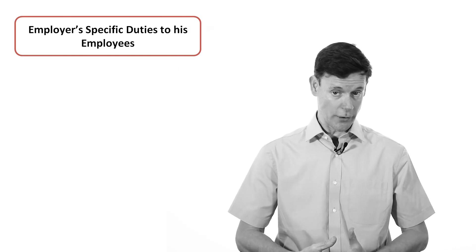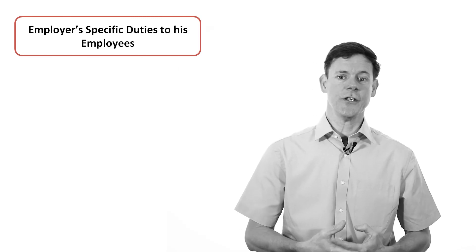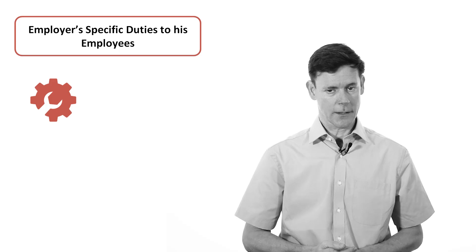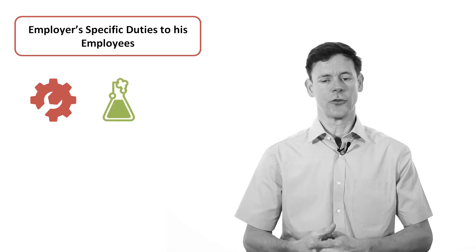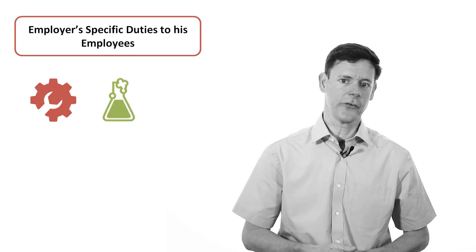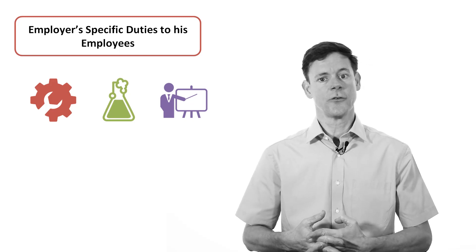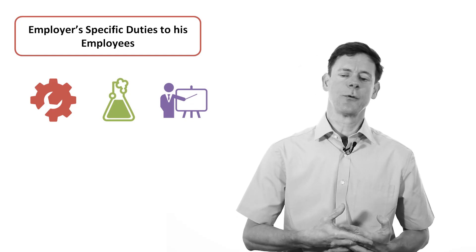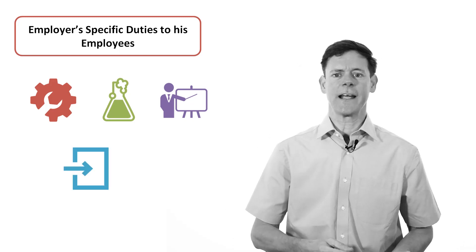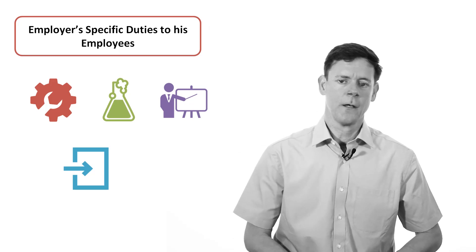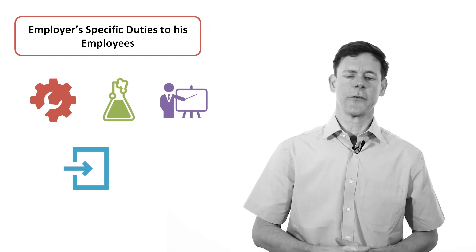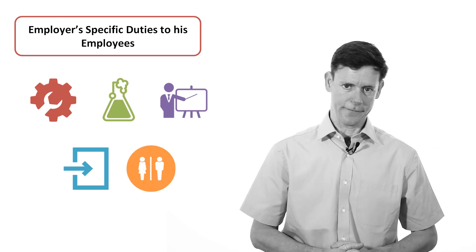The employer is also given specific duties under the Health and Safety at Work Act towards his employees. The employer has a duty to provide safe plant and systems of work, safe use, handling, storage and transport of articles and substances, information instruction, training and supervision, and provide a safe workplace with safe access and egress to and from it. The employer also has a duty to provide a safe work environment with access to adequate welfare facilities.